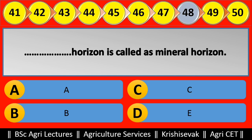Question 48: Blank horizon is called the mineral horizon. Options are: (a) A, (b) B, (c) C, (d) E. Right answer is A horizon, option A — A horizon is called the mineral horizon.